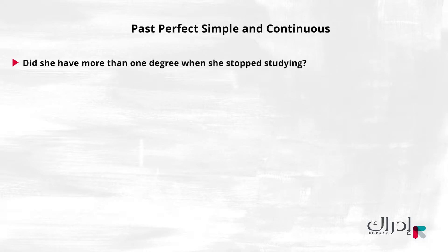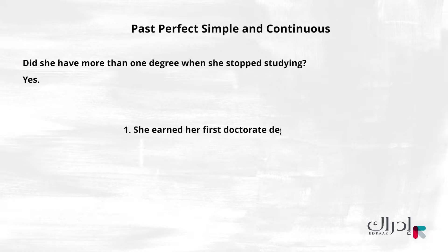Did she have more than one degree when she stopped studying? Yes. So the order of the activities is: she earned her first doctorate degree, then her second — both before she stopped studying.